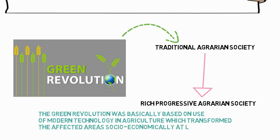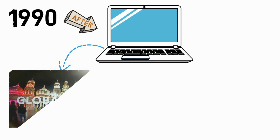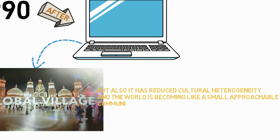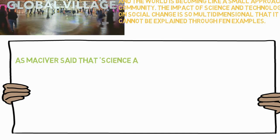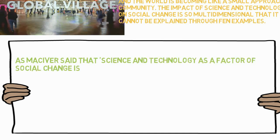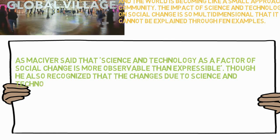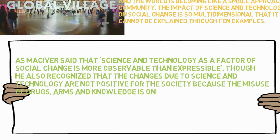After 1990, the world has gone through an IT revolution. This not only led towards the concept of globalization, but also reduced cultural heterogeneity, and the world is becoming like a small, approachable community. The impact of science and technology on social change is so multidimensional that it cannot be explained through a few examples. As MacIver said, science and technology as a factor of social change is more observable than expressible. Though he recognized that changes due to science and technology are not always positive — the misuse of drugs, arms, and knowledge is a key concern — he believes a society cannot remain separate from the influence of science and technology, as it is an eminent force of social change.